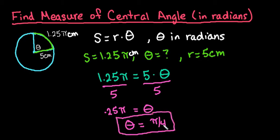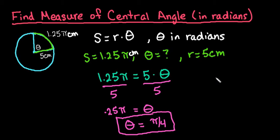If you wanted an approximate answer, you could take pi and divide it by 4. If you wanted to convert this to degrees, remember that you would multiply it by 180 over pi — the pi's would cancel out and you'd do 180 divided by 4. For this one, all we were doing was looking for the measure of the central angle in radians, but you can convert it into degrees if you need to. I do have videos that show how to convert to degrees if you need that.